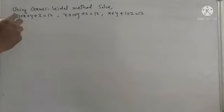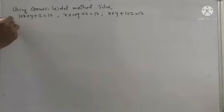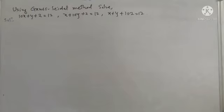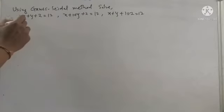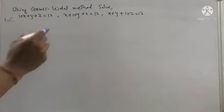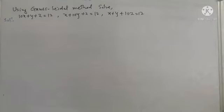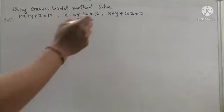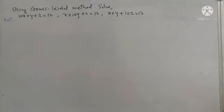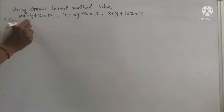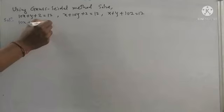First, the ideal method to solve the following system of equations. We have to first define the variables from the given system of equations. From the first equation, the coefficient of x is largest, so we take x from equation one; y from equation two, as the coefficient of y is largest in the second equation; and z from equation three.